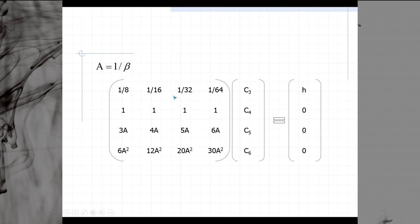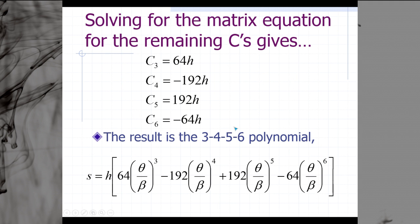If we take the inverse of this matrix, multiply it by this vector, we can solve for all of our c's, which we find as follows: c3 equal to 64h, c4 equal to negative 192h, c5, and c6, resulting in a 3, 4, 5, 6 polynomial, which are referring to the powers of the various pieces of our equation for our s equation.